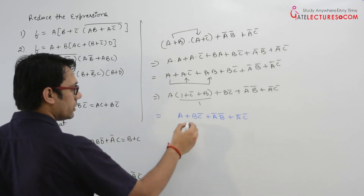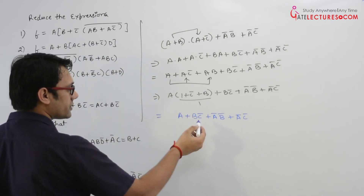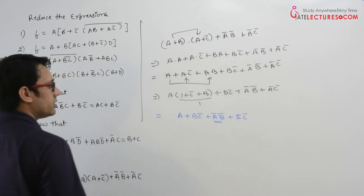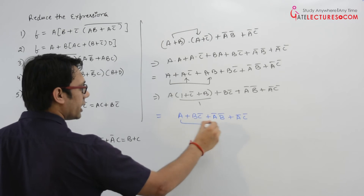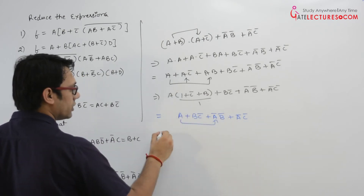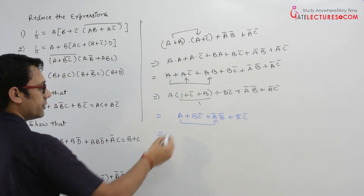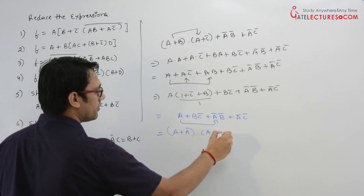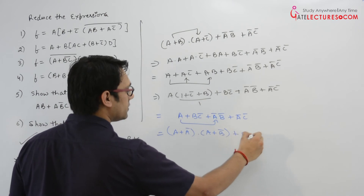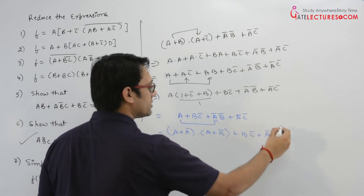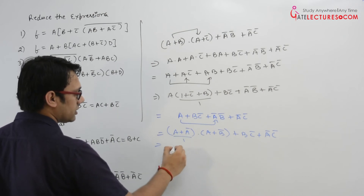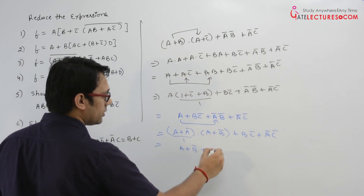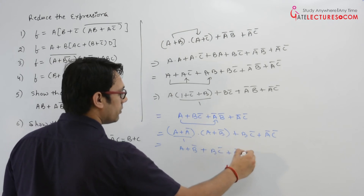Now you can take any one of these two expressions. Better way is to distribute A between this and A with this. So let us distribute A with A complement B complement. It can be written as (A plus A complement) dot (A plus B complement) plus B C complement plus A complement C complement. Since A plus A complement equals 1, it further simplifies to A plus B complement plus B C complement plus A complement C complement.